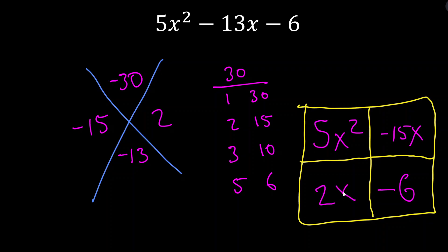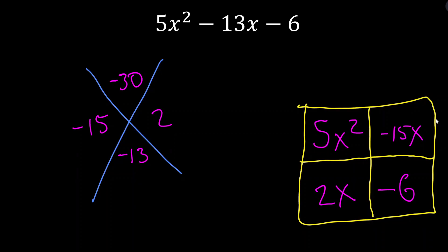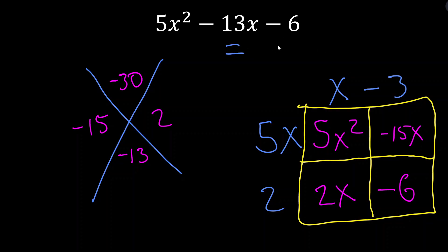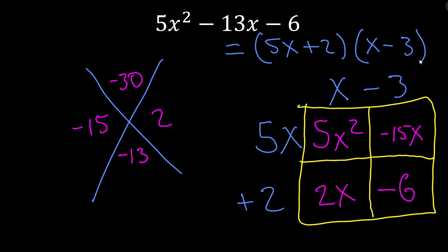So I write negative 15x and positive 2x in the box. Taking the GCF of the top row: 5 and negative 15 share a 5, and x² and x share an x, so GCF is 5x. What do I multiply 5x by to get 5x²? That's x. What do I multiply x by to get 2x? That's 2. What do I multiply 2 by to get negative 6? That's negative 3. So our final factored form is (5x + 2)(x − 3). This is personally my favorite method when a is not equal to 1 and it's not easy to guess and check.